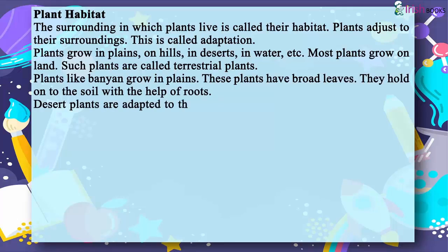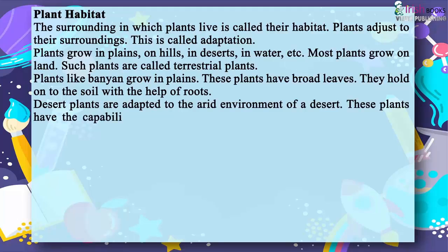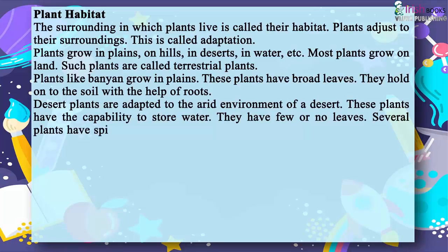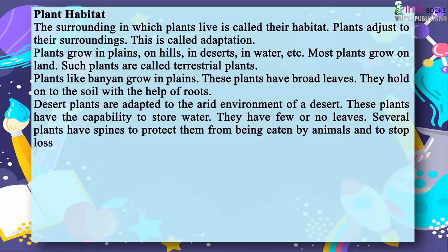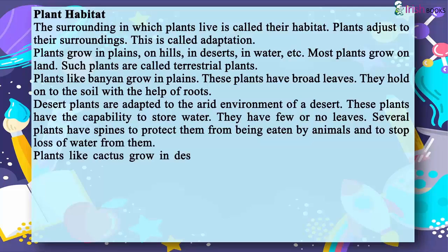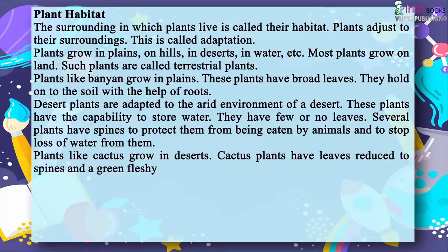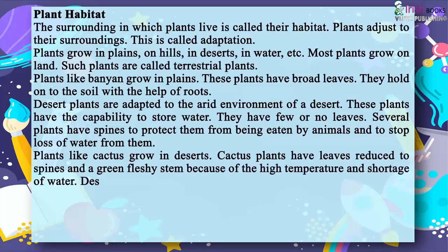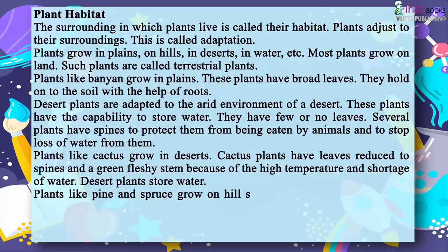Desert plants are adapted to the arid environment of a desert. These plants have the capability to store water. They have few or no leaves. Several plants have spines to protect them from being eaten by animals and to stop loss of water. Plants like cactus grow in deserts. Cactus plants have leaves reduced to spines and a green, fleshy stem because of the high temperature and shortage of water. Desert plants store water.